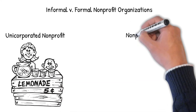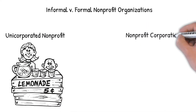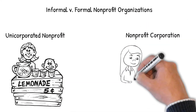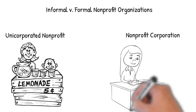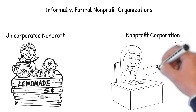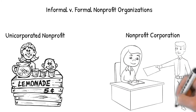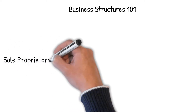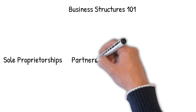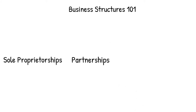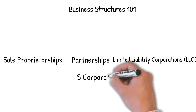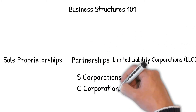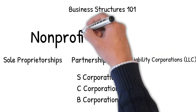Nonprofits can be unincorporated — think about a group of kids selling lemonade or candy to fund a school trip — or a formal nonprofit corporation that submitted the required documents to the state and federal government. When we think about all the different business structures that exist, there are many options: sole proprietorships, partnerships, limited liability corporations or LLCs, S corporations, C corporations, B corporations.